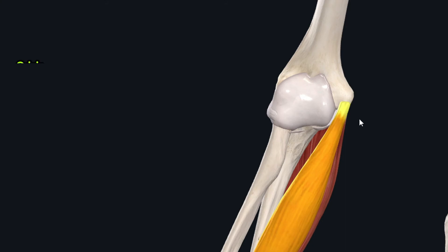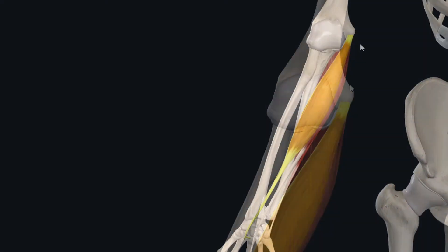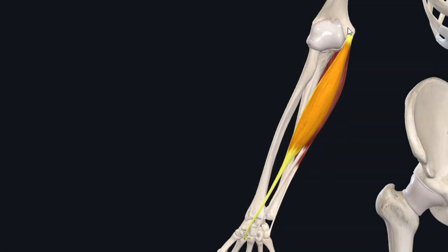If we study the origin of the flexor carpi radialis muscle, this muscle originates through the common flexor tendon from the medial epicondyle of the humerus. After origin from the medial epicondyle, the tendon of origin forms a fusiform shaped muscle belly, which travels inferolaterally towards the hand.